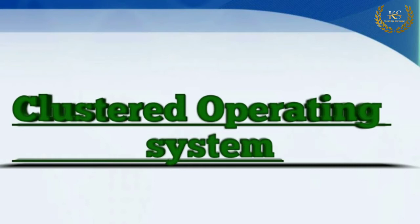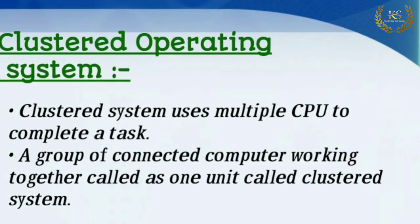They can have a single processor or a multiple processor system — we call this a clustered operating system. Point-wise: the first point is that a cluster system uses multiple CPUs to complete a task. A group of connected computers working together as a unit is called a cluster system.